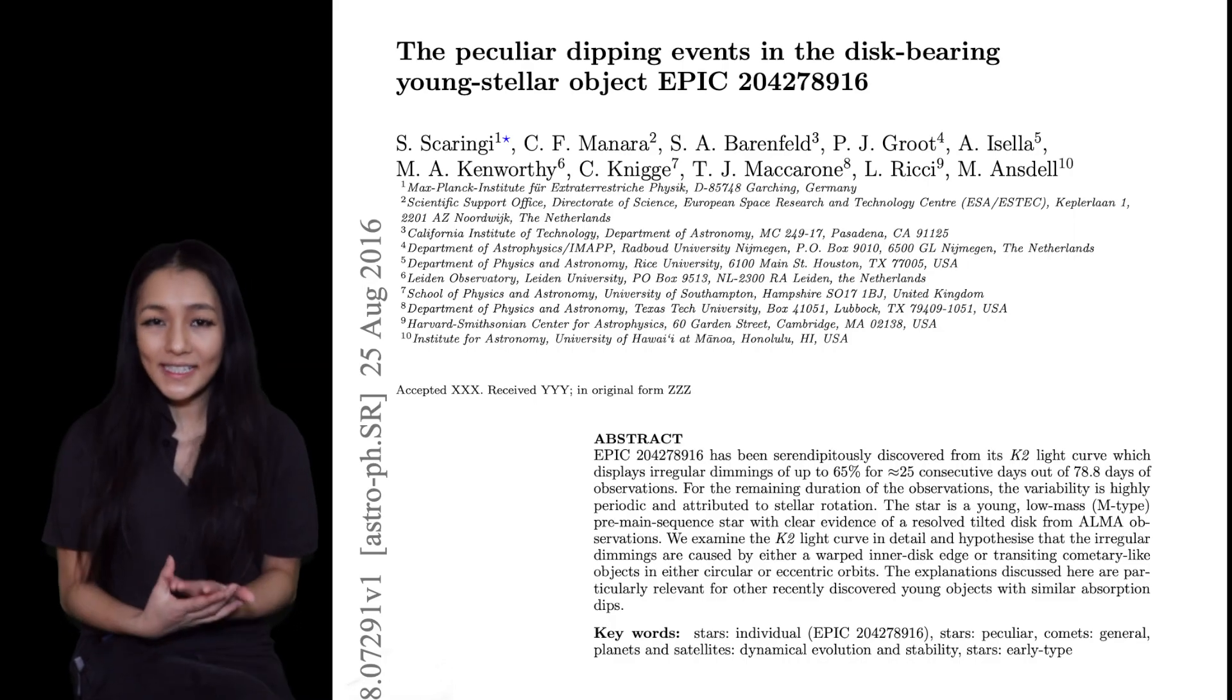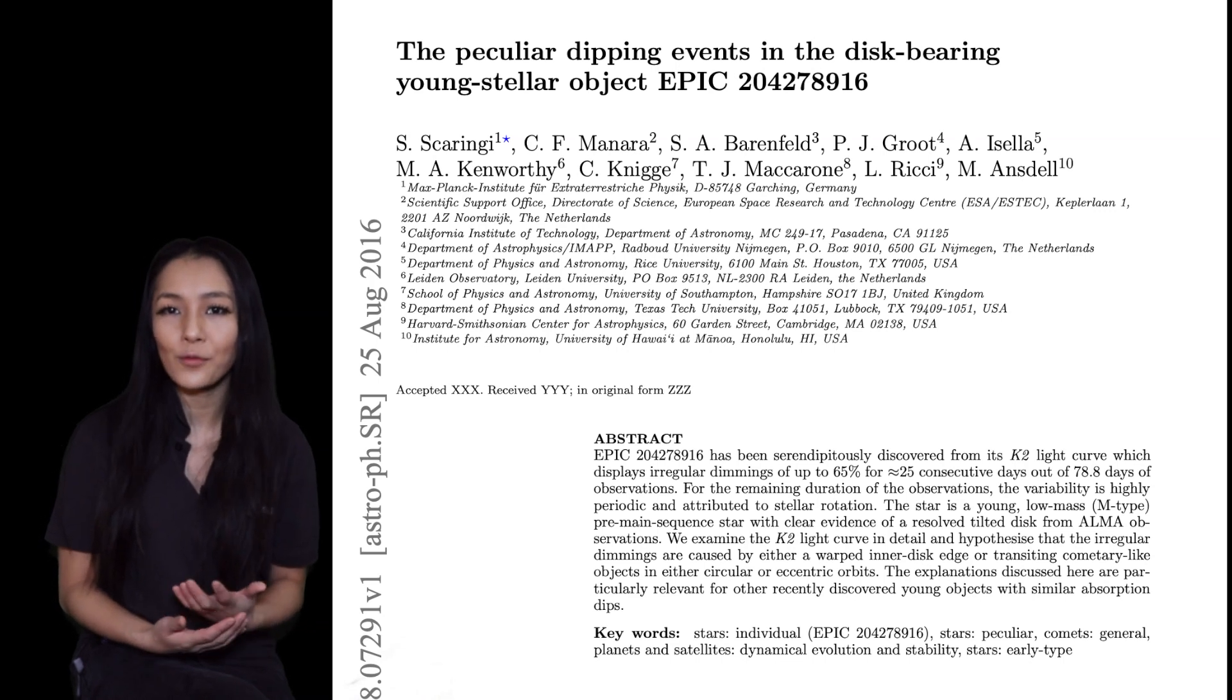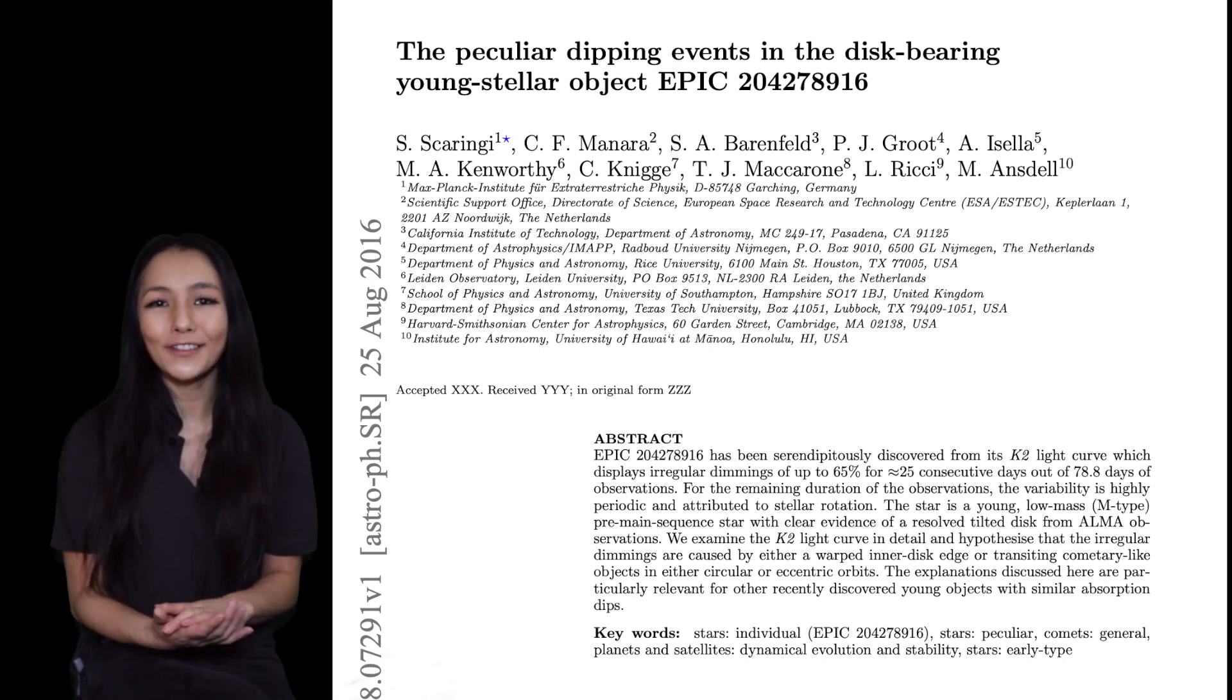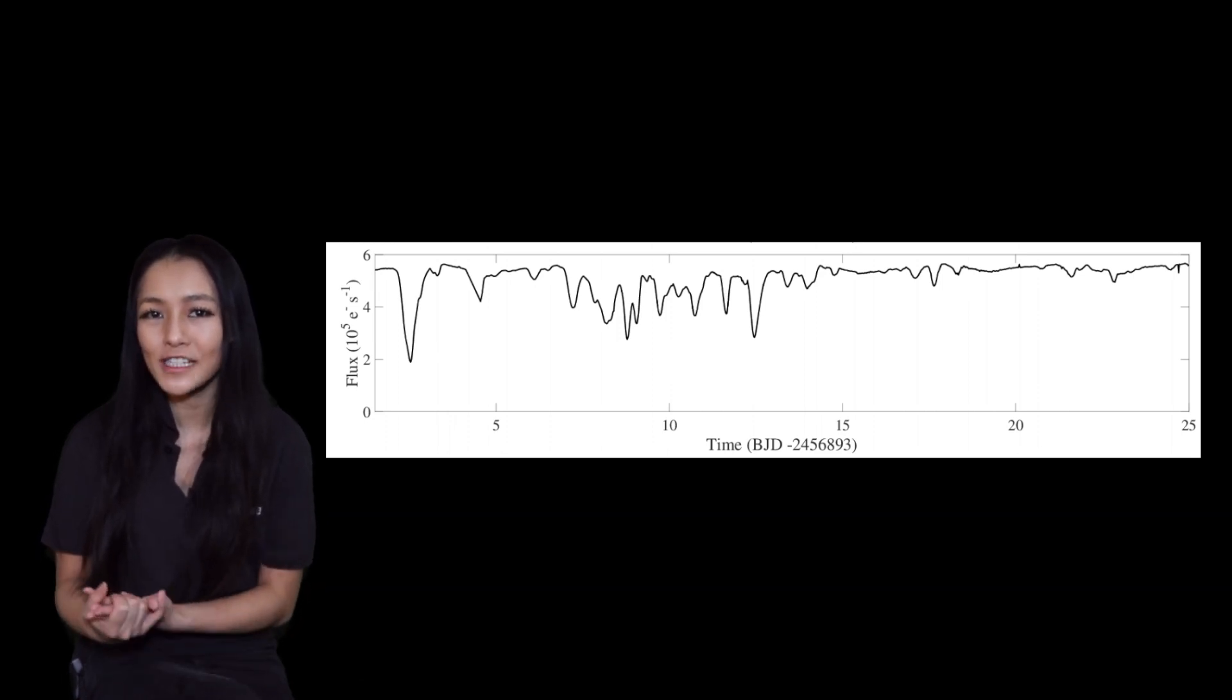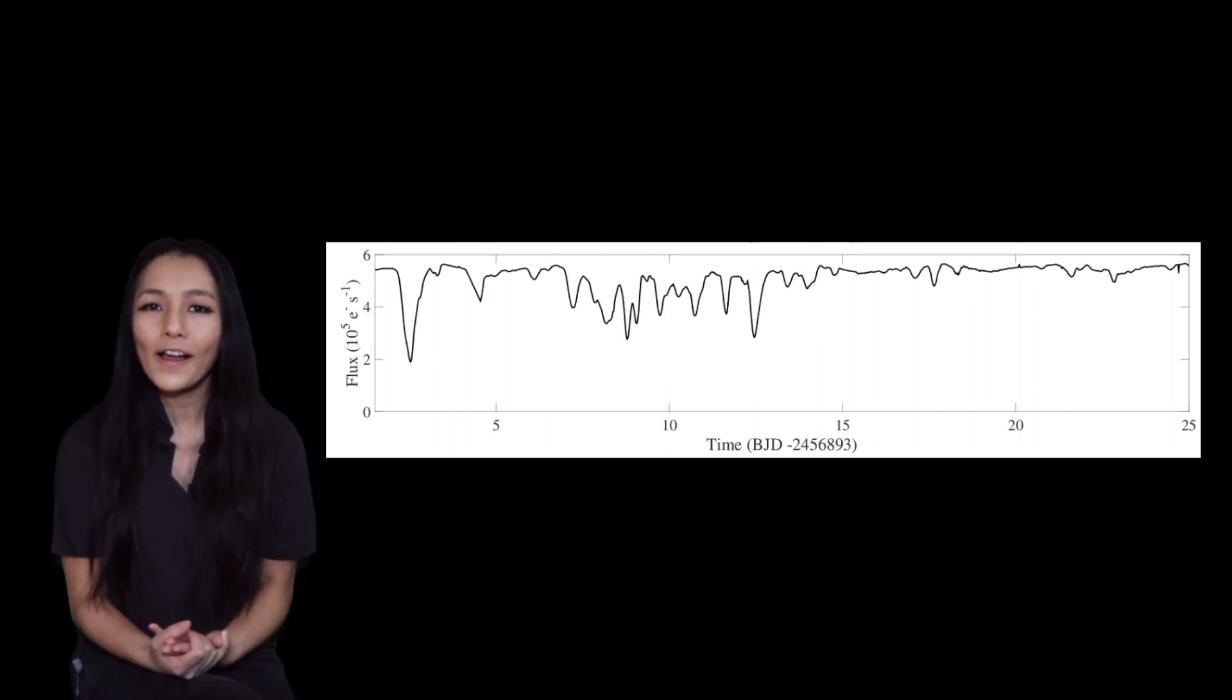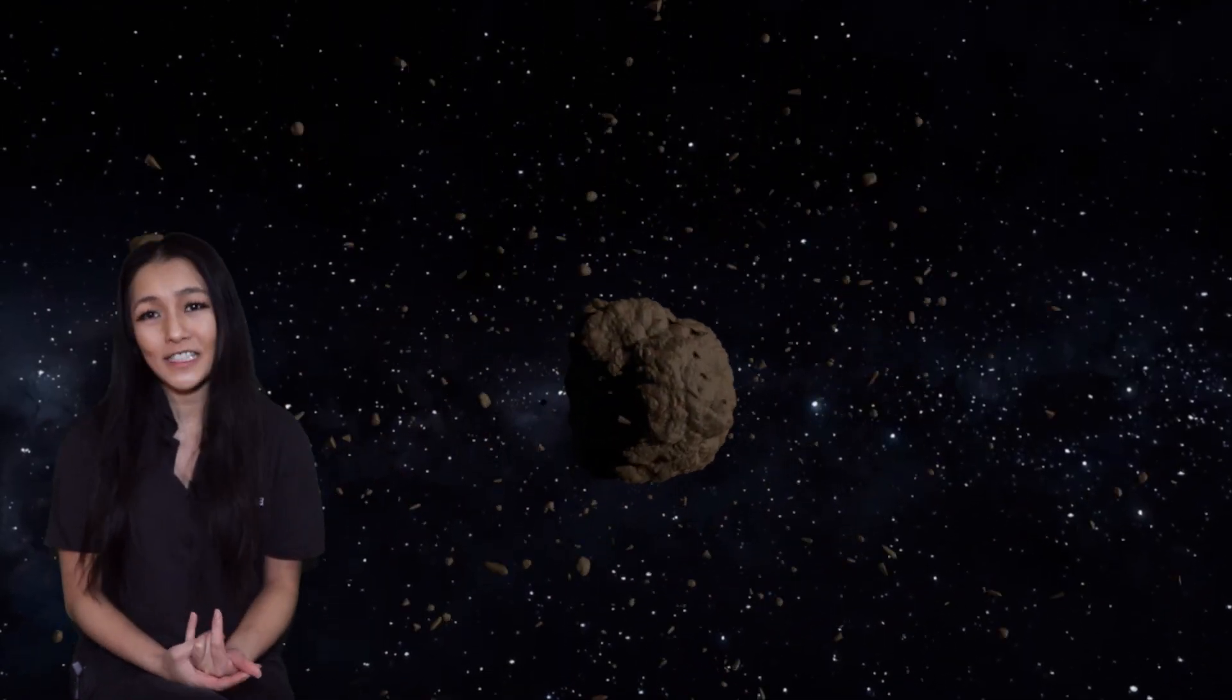Later in 2016, a star named EPIC 204278916 was observed to have light dips of up to 65 percent in periodic intervals. But likewise, the favored hypothesis of the cause is a swarm of comets orbiting the star and not a Dyson sphere.